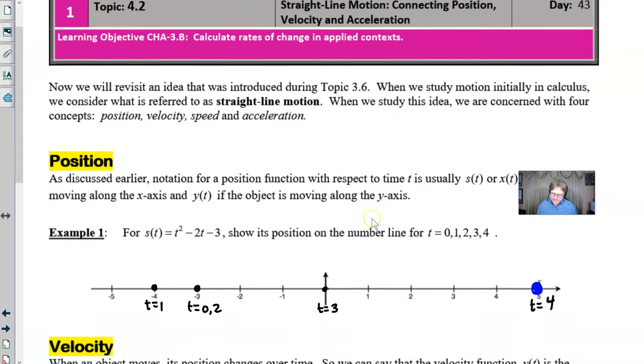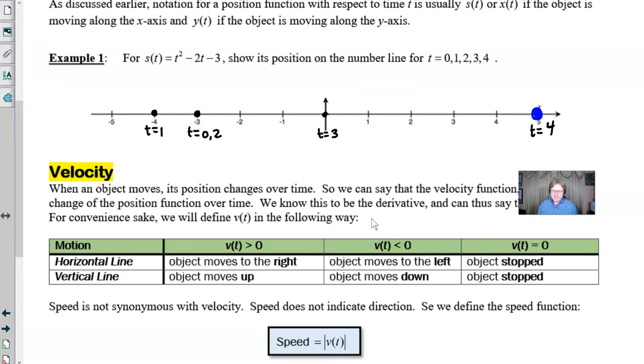Velocity gets to be a little bit more complicated because of the idea of speed. But what we know here is that when an object moves, its position changes over time. So we can say that the velocity function v(t) is the change of position function over time. We know this to be the derivative, and we can say that v(t) is s prime of t. For convenience sake, we're going to define v(t) in the following way.